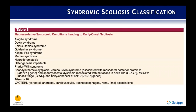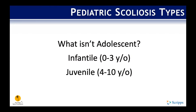What else is not idiopathic? Syndromic scoliosis includes Marfan syndrome, Ehlers-Danlos, Trisomy-21, VACTERL, Trisomy-18, and other syndromes that are frequently tested and associated with scoliosis development. Again, these are not to be confused with AIS.